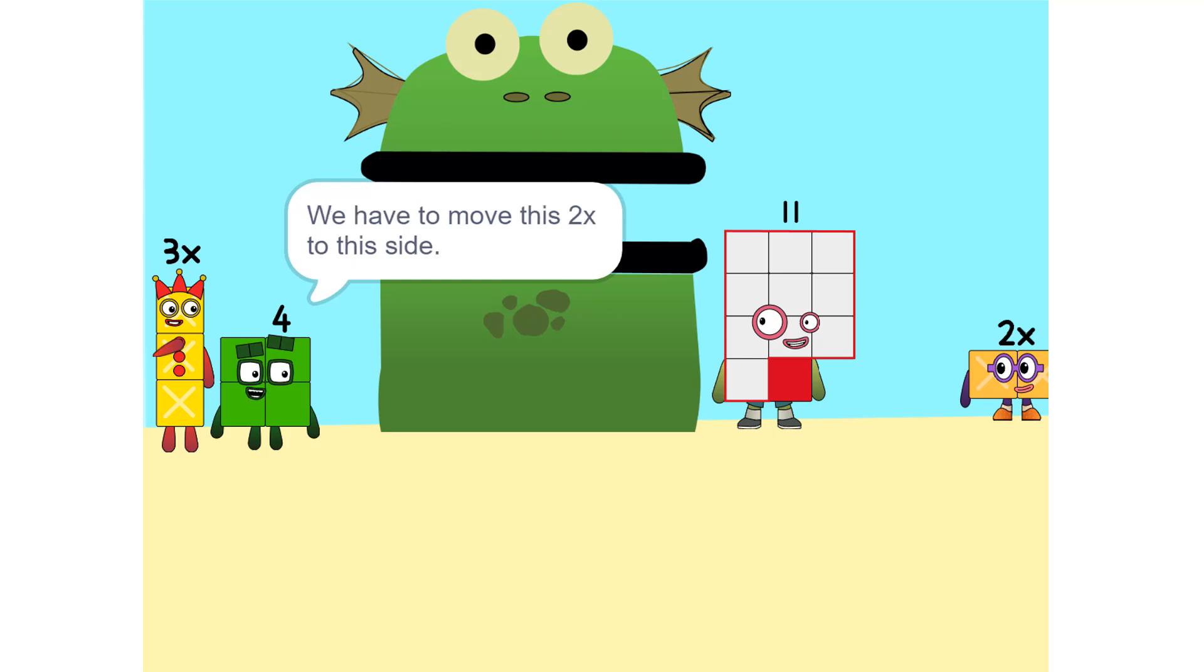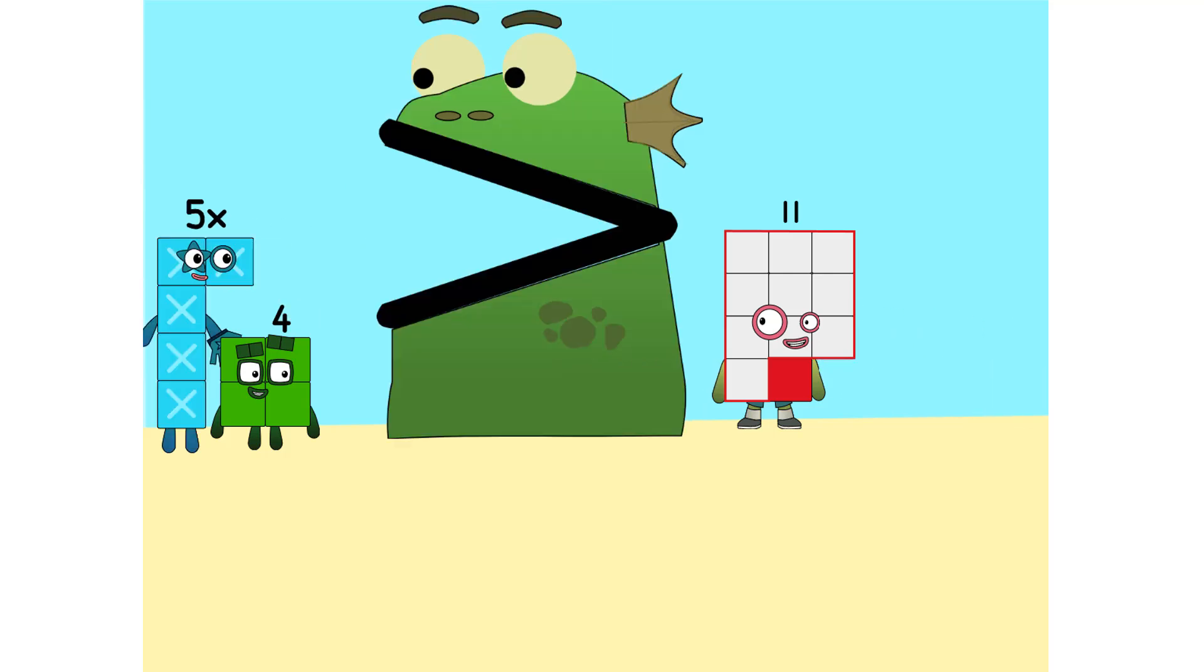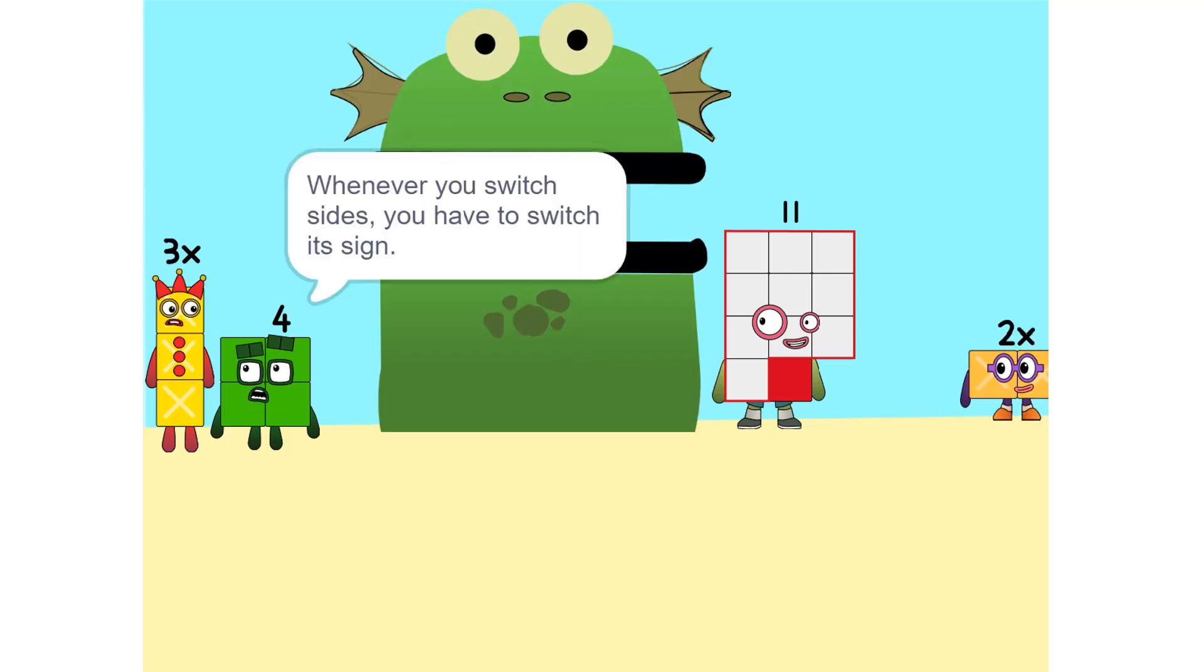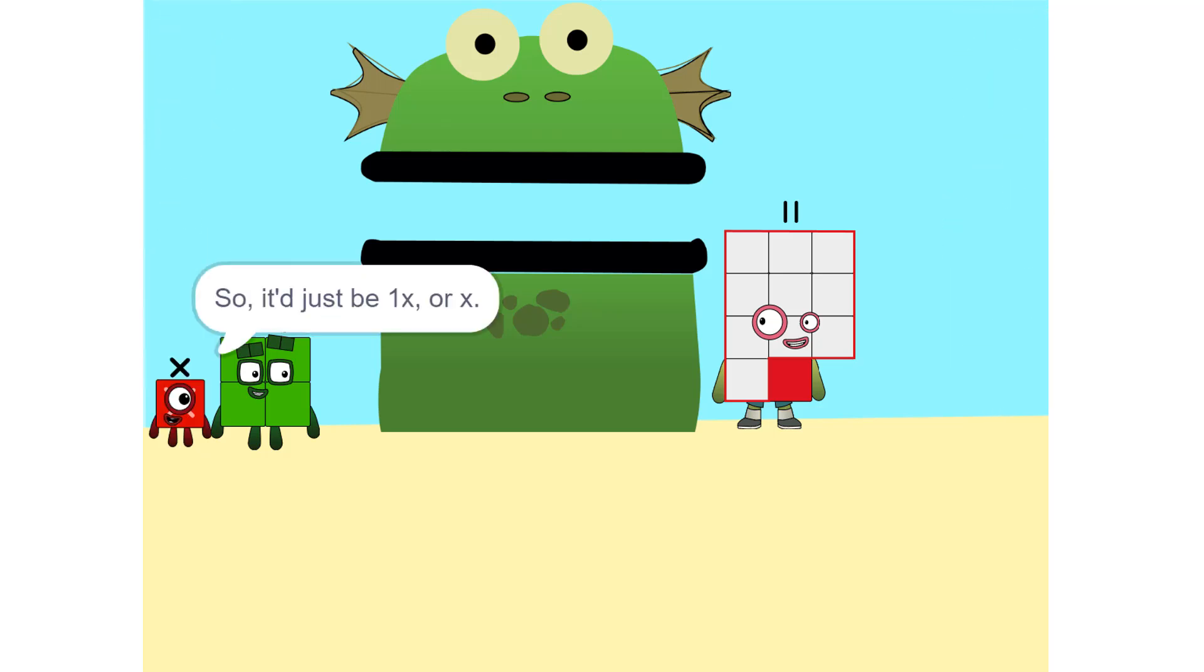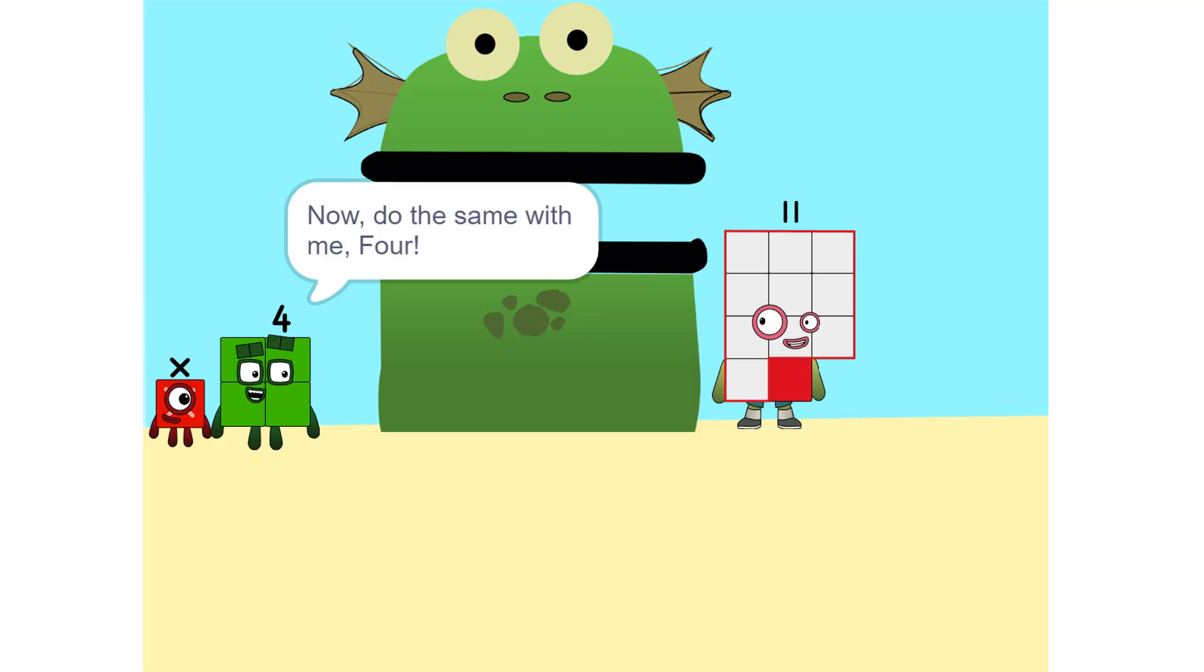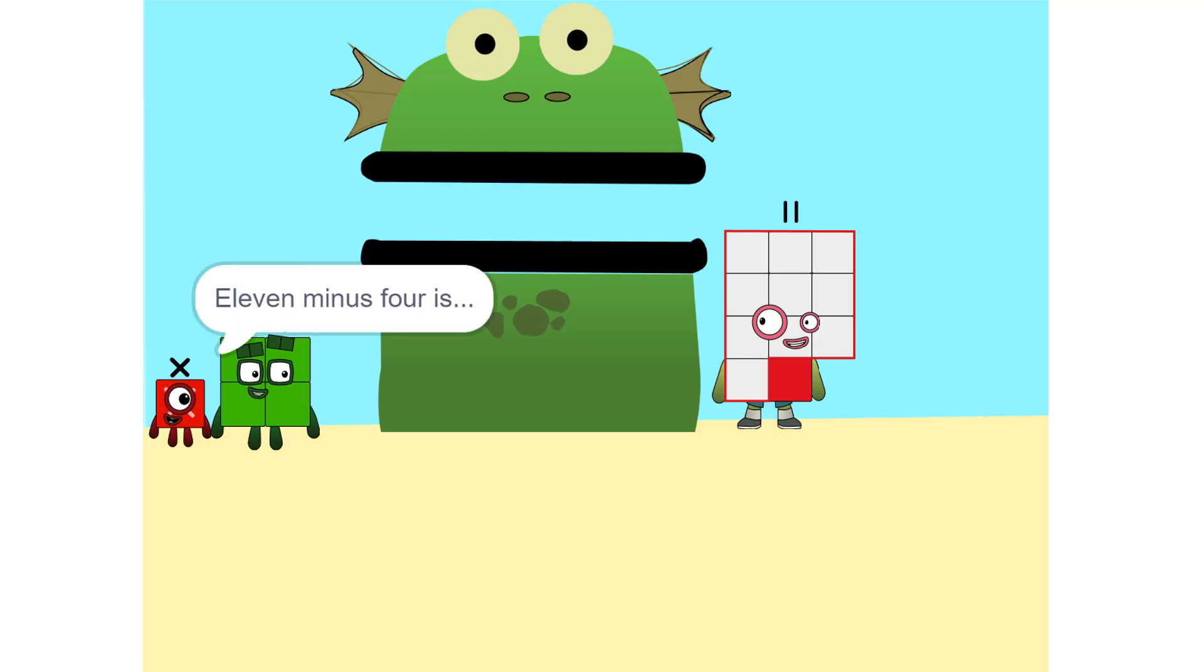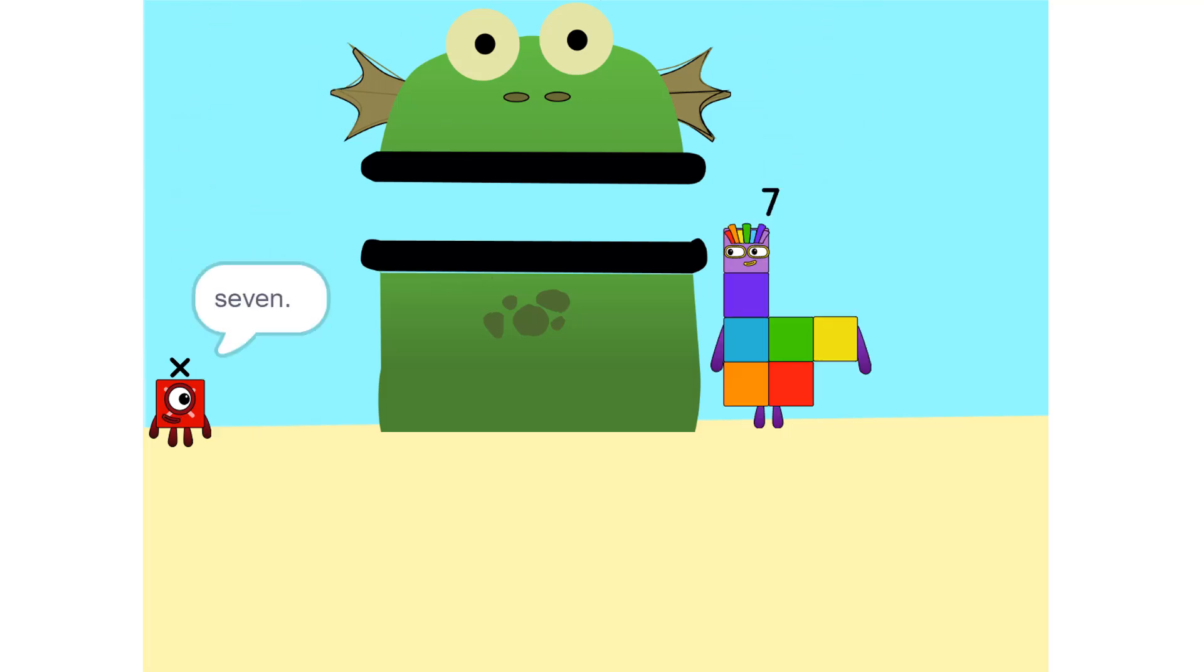Now we have to move things around. We have to move this 2x to this side. 5x. So? Whenever you switch sides, you have to switch the sign. So if it's positive, it becomes negative and vice versa. Why? Think of it this way: you're subtracting 2x from each side. So it'd just be 1x or x. Correct. Now do the same with the 4. Okay. 11 minus 4 is 7.